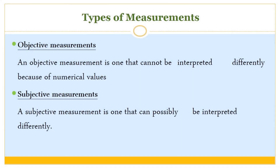Types of Measurements. Objective Measurements: an objective measurement is one that cannot be interpreted differently because of its numerical values. Subjective Measurements: a subjective measurement is one that can possibly be interpreted differently.